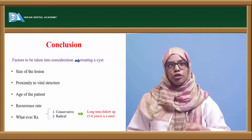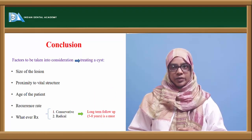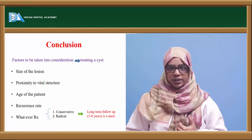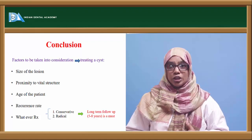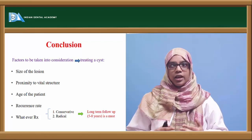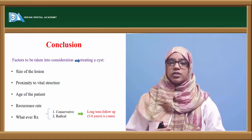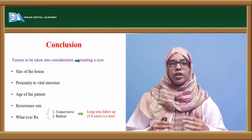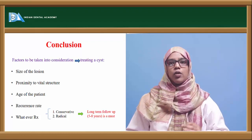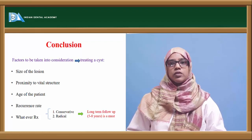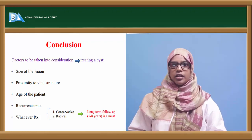To conclude, the factors to consider when treating a cystic lesion are the size of the cystic lesion, proximity to vital structures, age of the patient, and its recurrence rate — then plan whether a conservative or radical treatment approach is appropriate. Whatever the treatment plan, always keep in mind that long-term follow-up is very important — a minimum of 5 to 8 years of follow-up is a must.